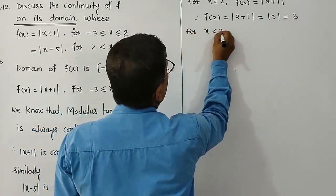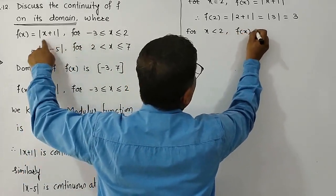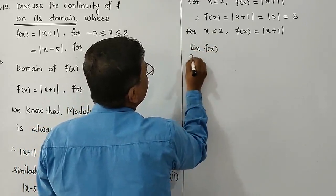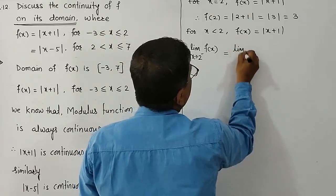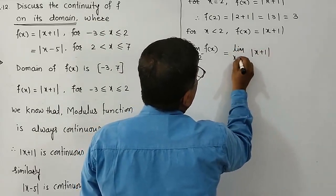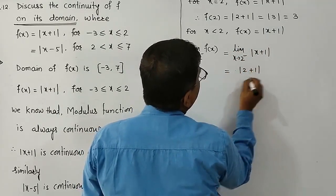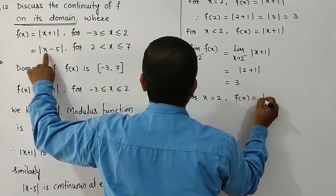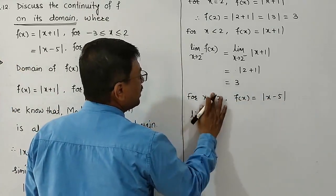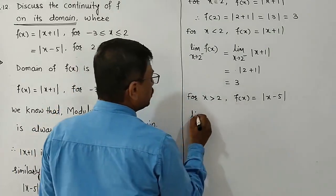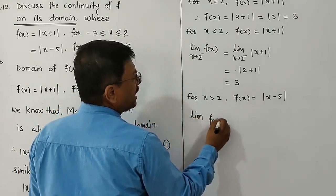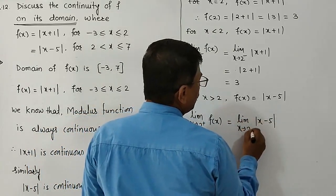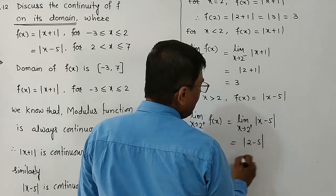For x < 2, f(x) = |x+1|, so the left-hand limit is: limit of |x+1| as x → 2⁻ = |2+1| = 3. For x > 2, f(x) = |x-5|, so the right-hand limit is: limit of |x-5| as x → 2⁺ = |2-5| = |-3| = 3.